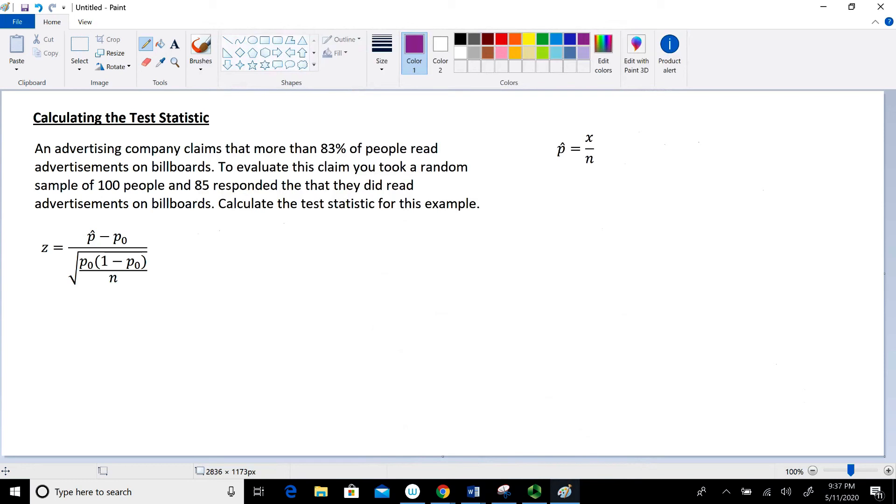In this lesson, we're going to take a look at how to calculate the test statistic when we're doing a hypothesis test on a single proportion. I'm continuing on with an example from a previous video: An advertising company claims that more than 83% of people read advertisements on billboards. To evaluate this claim, you took a random sample of 100 people, and 85 responded that they did read advertisements on billboards.